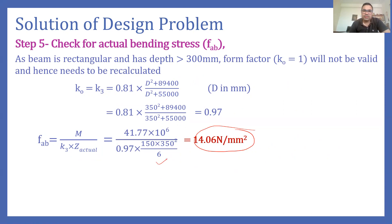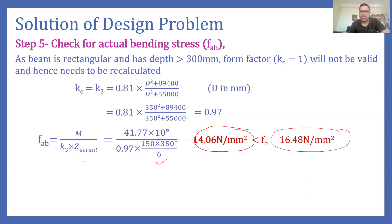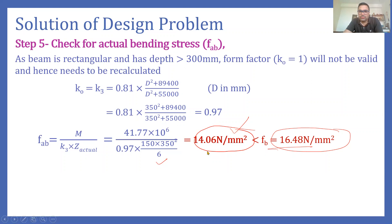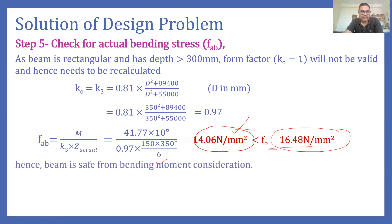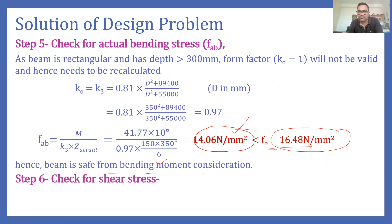The permissible bending stress f_b from the table is 16.48 N/mm². Since f_ab (14.06) is less than f_b (16.48), the condition is satisfied. The beam size of 150 mm × 350 mm is safe to carry the bending moment. Hence the beam is safe from bending moment considerations.